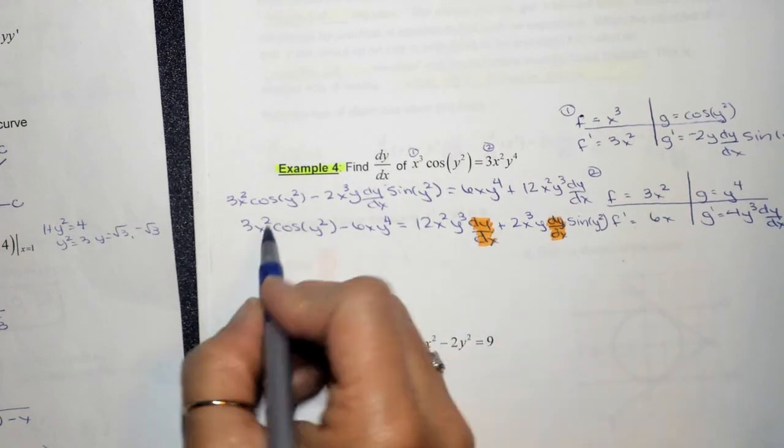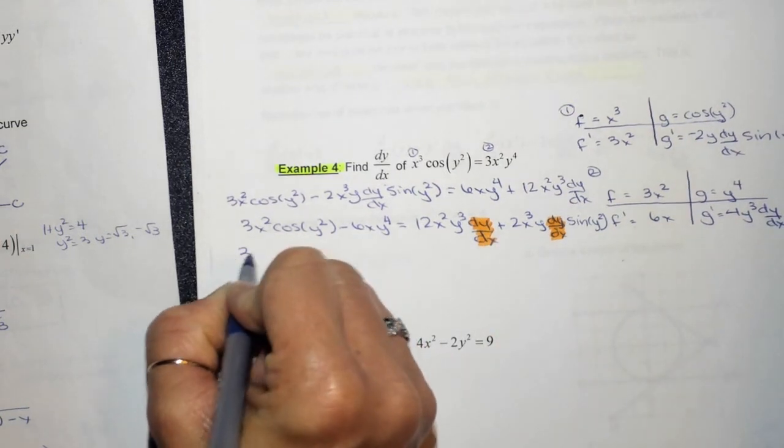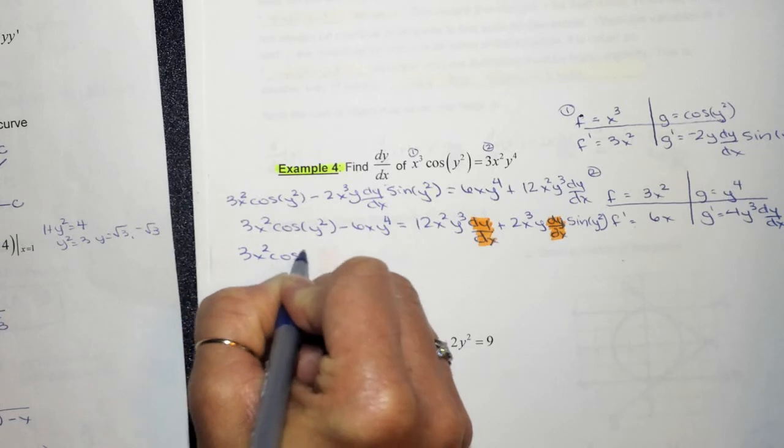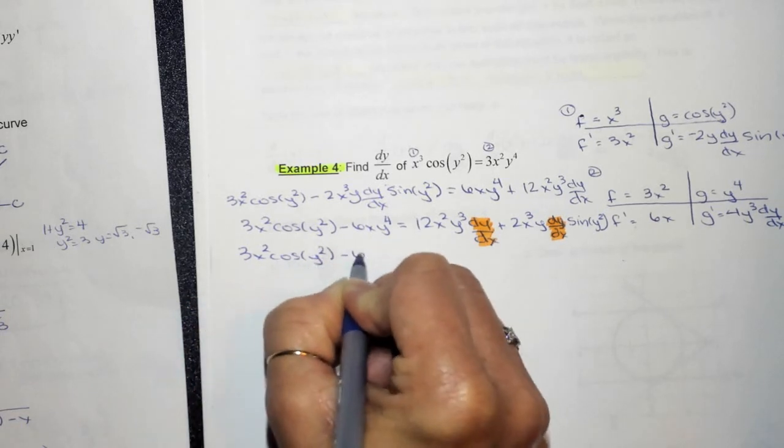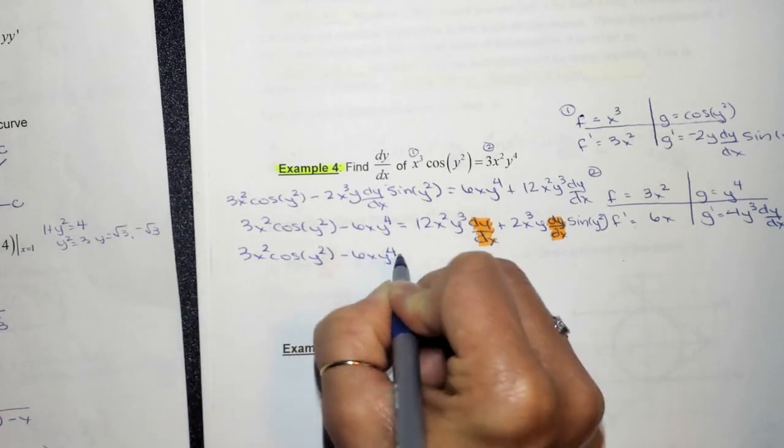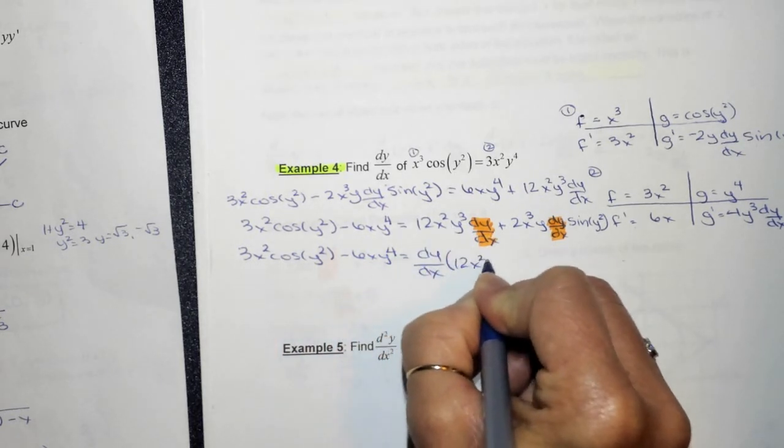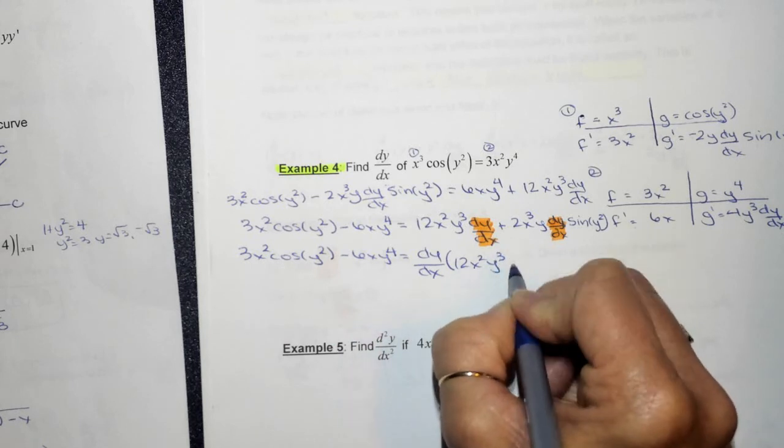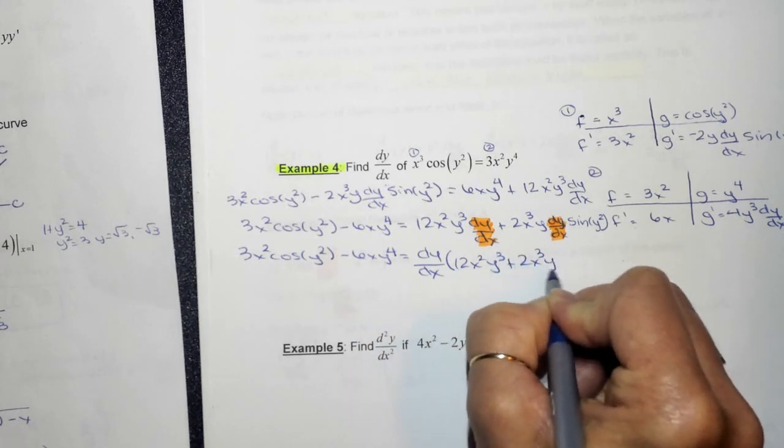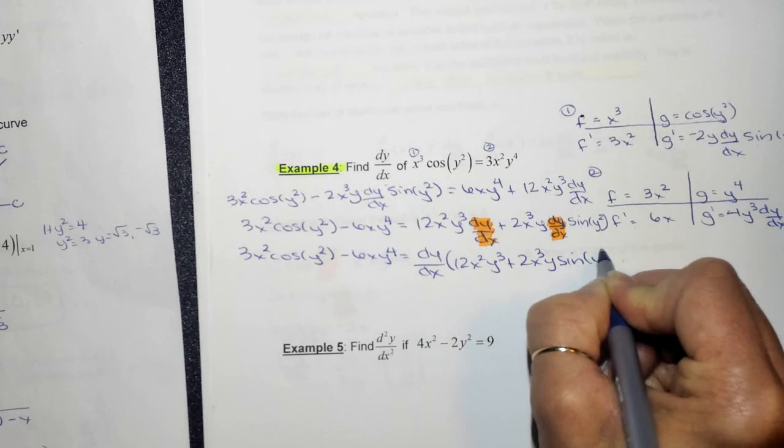So what I want to do is factor out that dy dx. So when I factor out the dy dx, this is just going to stay, 3x squared cosine y squared, minus 6xy to the fourth, is equal to, factor out the dy dx, and you're left with 12x squared y cubed plus 2x cubed y sine of y squared.